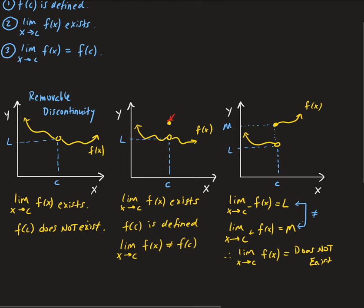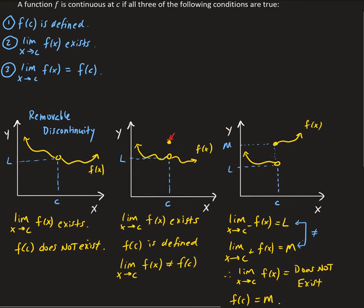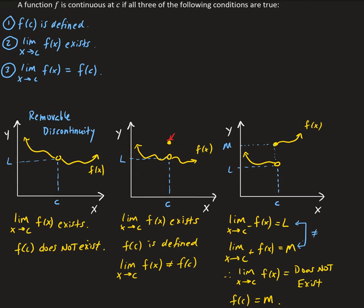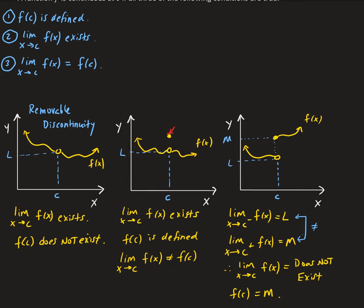In this case, the function evaluates c as equal to m, so the function is defined. However, the limit doesn't exist. That's the third case, and this tells us that the function is not continuous at c.